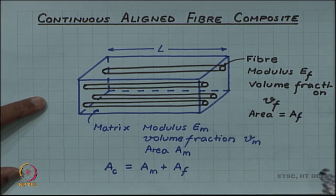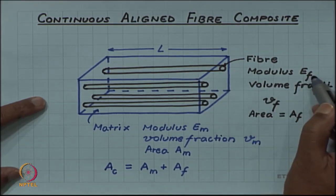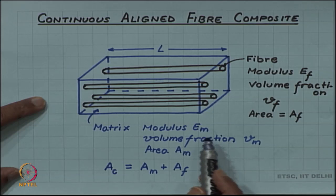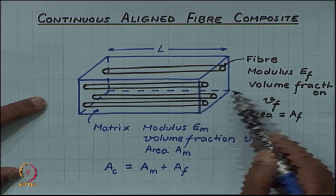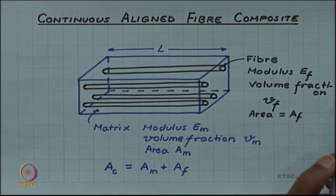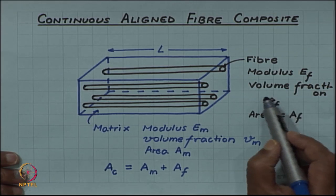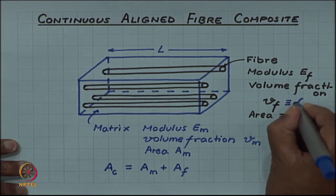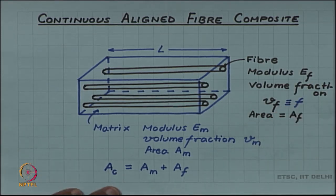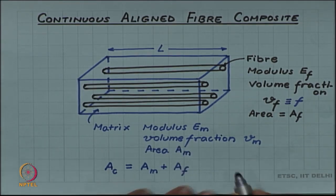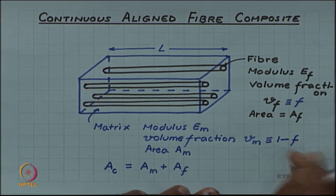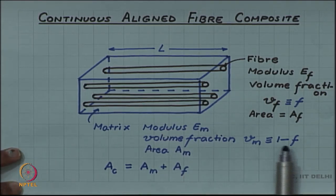The fibers are the reinforcing phase, so they have a different modulus E_f, whereas the modulus of the matrix is E_m. The volume fraction of the two phases is important in determining the modulus of the final composite. The volume fraction of fiber is V_f, or more simply denoted as f. The volume fraction of the matrix is V_m, which is 1 minus f, because there are only two phases.